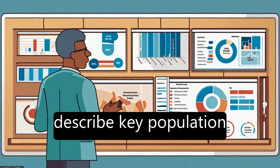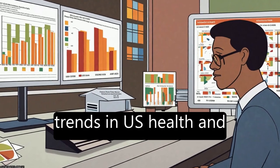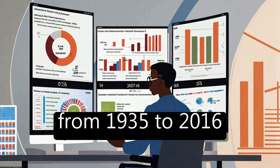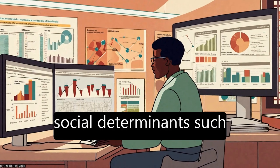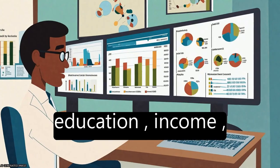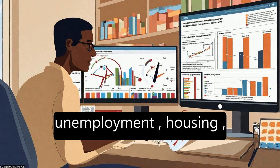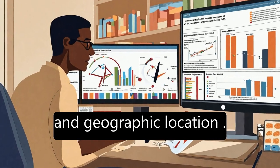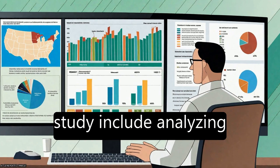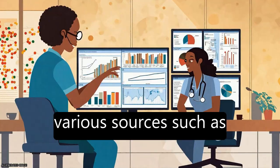The study aims to describe key population health concepts and examine major empirical trends in U.S. health and healthcare inequalities from 1935 to 2016, according to important social determinants such as race-ethnicity, education, income, poverty, area deprivation, unemployment, housing, rural-urban residence, and geographic location.